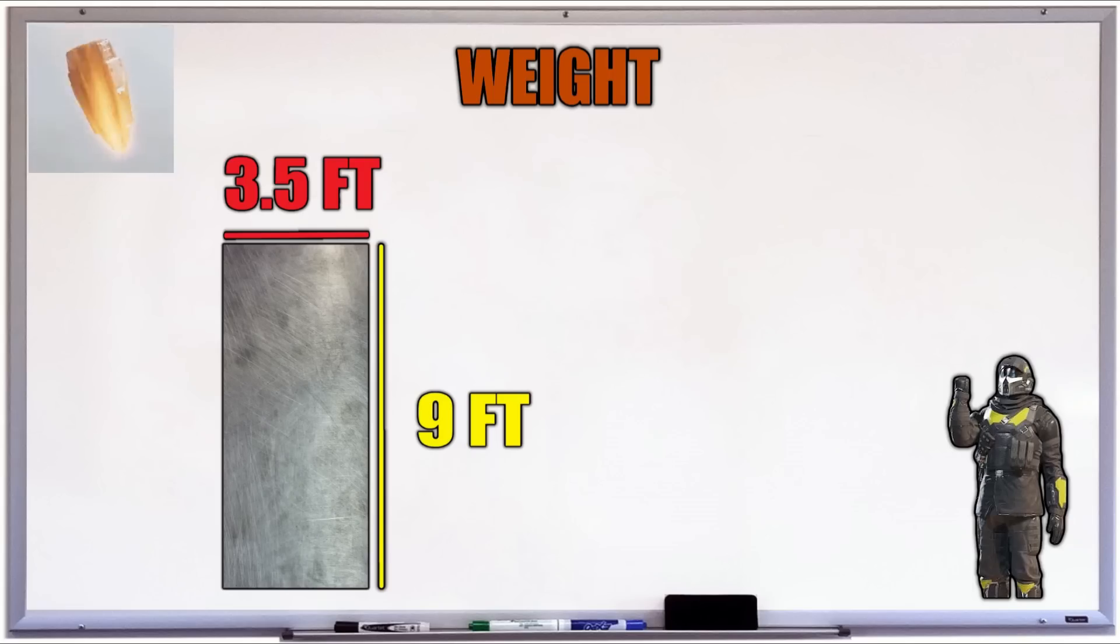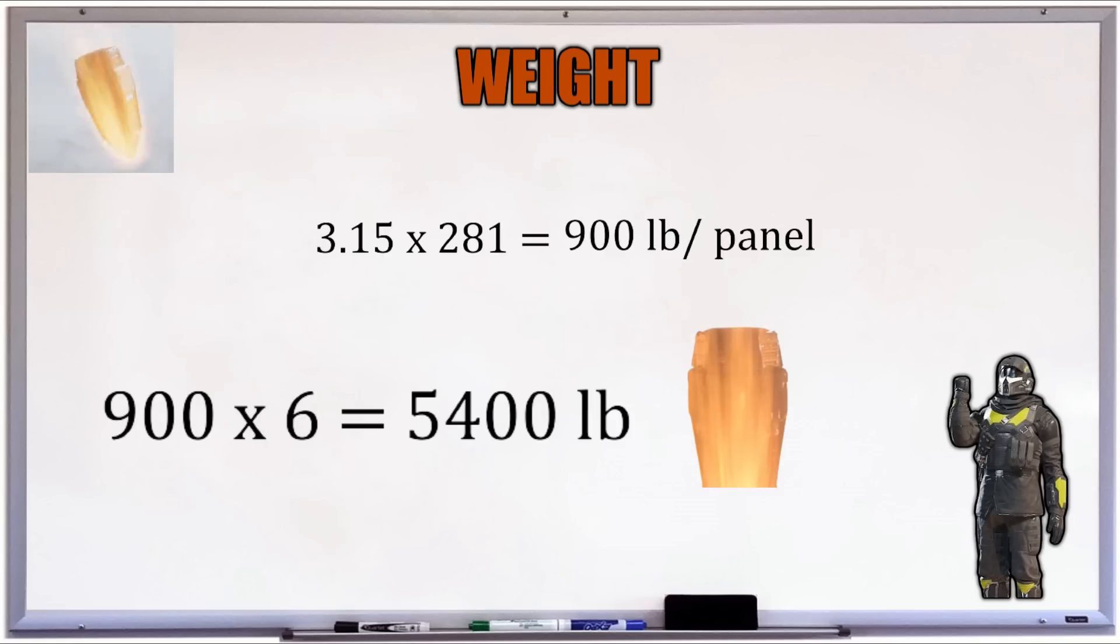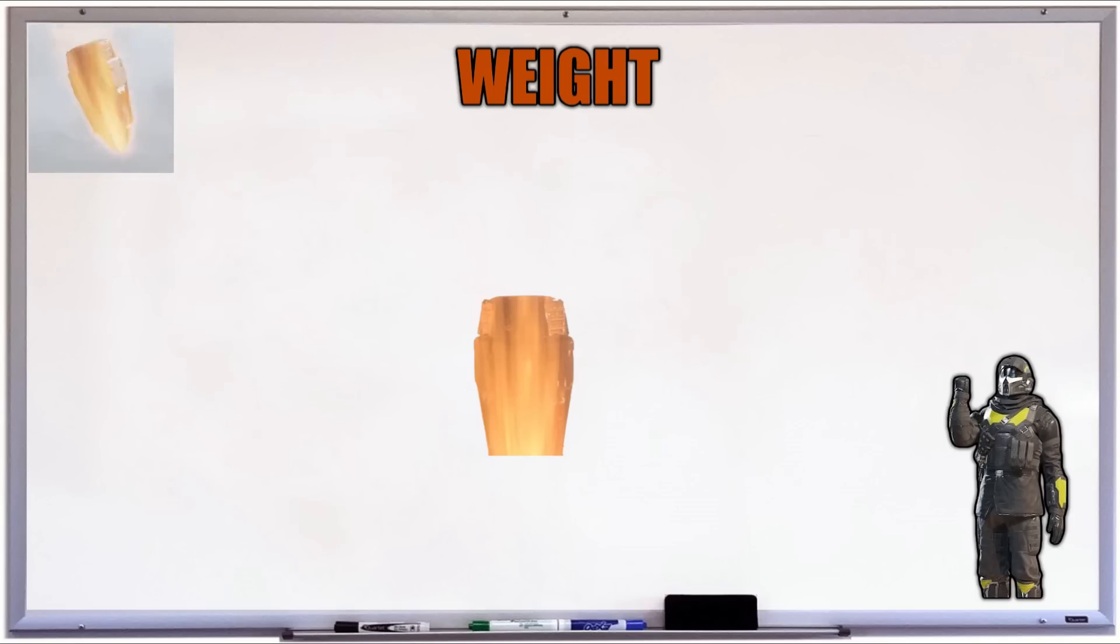So first, let's get a quick volume of one of these panels. We've got nine feet by three and a half feet by 0.1 feet thick, converting from inches. That gives us 3.15 feet cubed. Now, multiplying that by our density of titanium, 281, we get about 900 pounds per panel, and we have six of those. So that means we get a grand total weight for our human tube of 5,400 pounds.